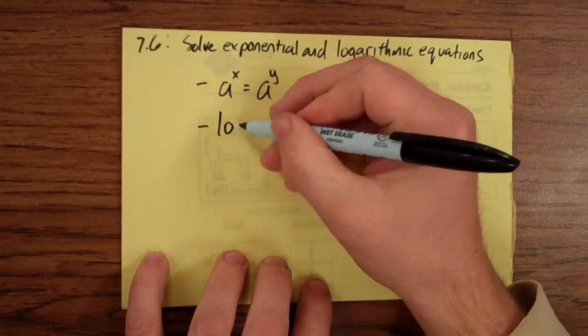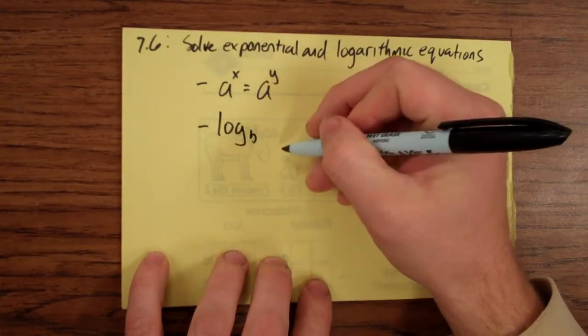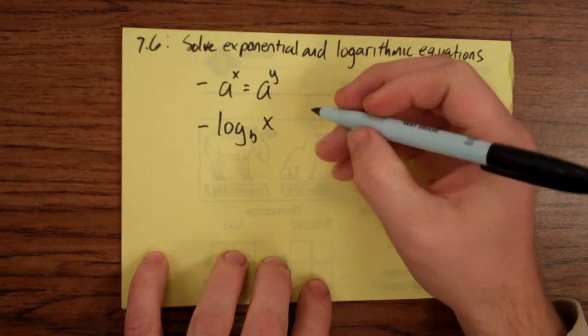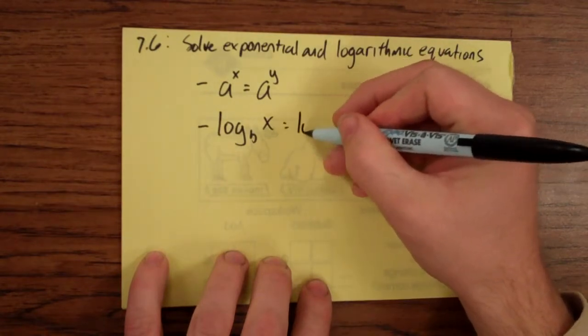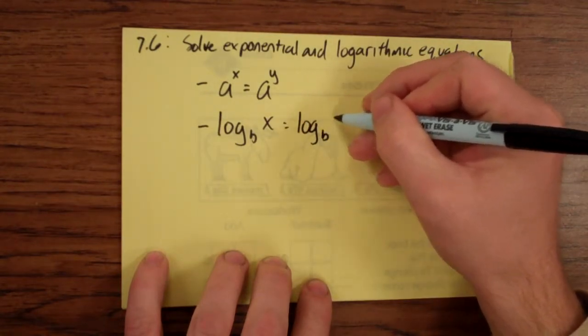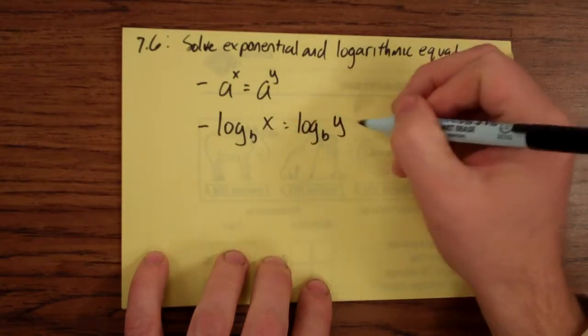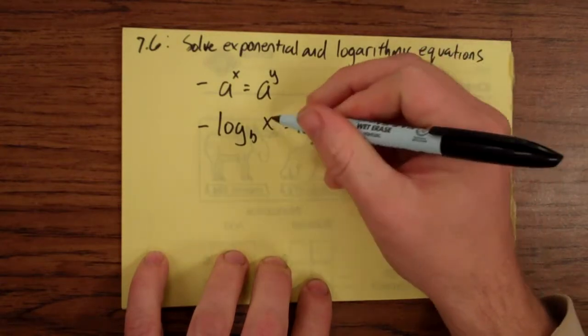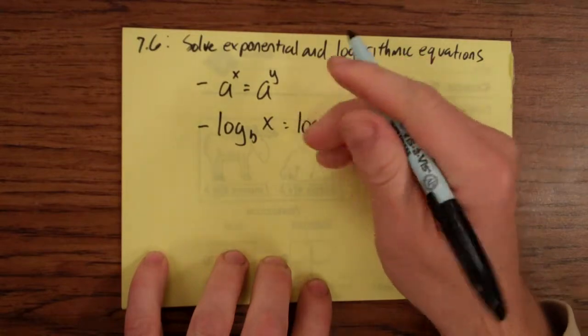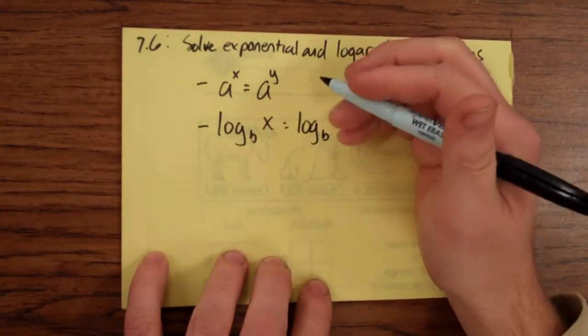The next one is, say I have a log of some base of a number, and that's equal to the log of the same base of another number. In these, in the x and the y stuff, there's variables involved.